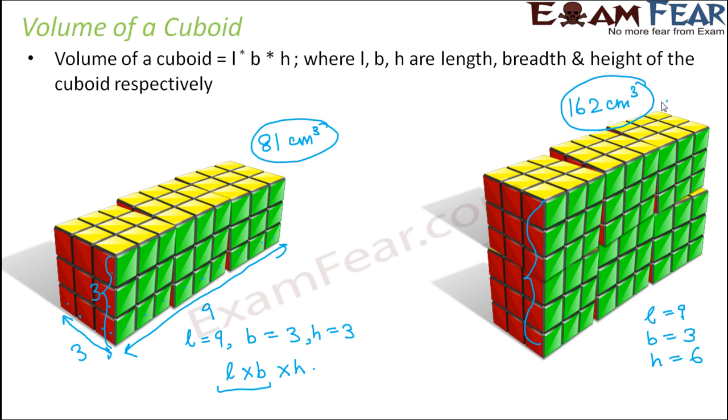So we can say that the volume of a cuboid is given by L into B into H, where L, B, H are length, breadth and height of the cuboid respectively.